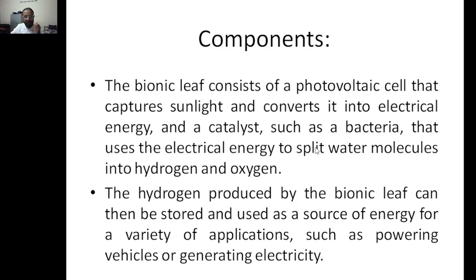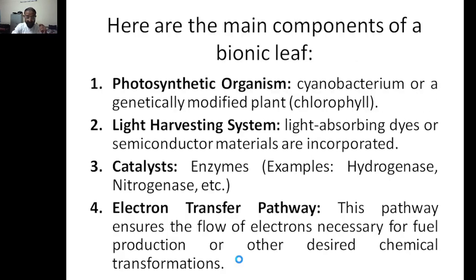The catalyst uses electrical energy to split water molecules into hydrogen and oxygen. The hydrogen produced by the bionic leaf can then be stored and used for a variety of applications such as powering vehicles or generating electricity. The main component is a photosynthetic organism — it can be a cyanobacterium or genetically modified plants with chlorophyll.